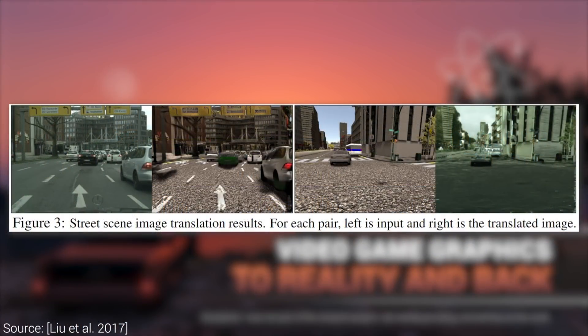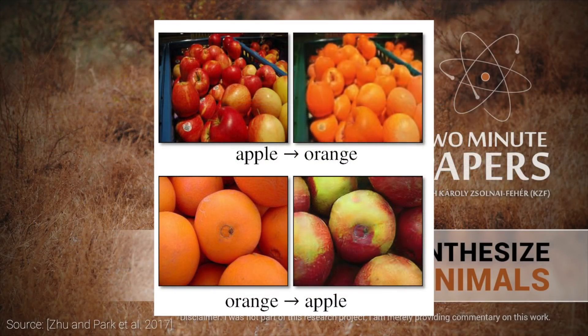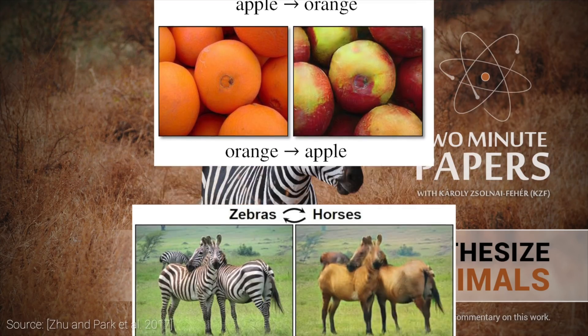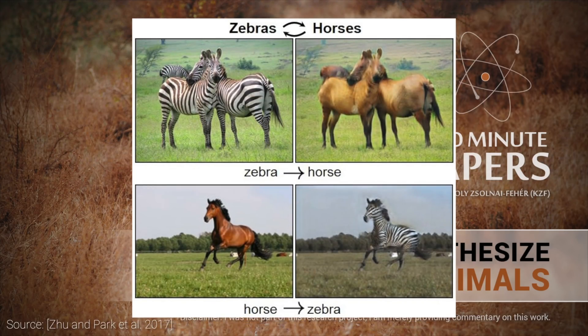However, much like many learning algorithms today, most of these techniques have a key limitation. They need a lot of training data — in other words, these neural networks require seeing a ton of images in all of these classes before they can learn to meaningfully translate between them.